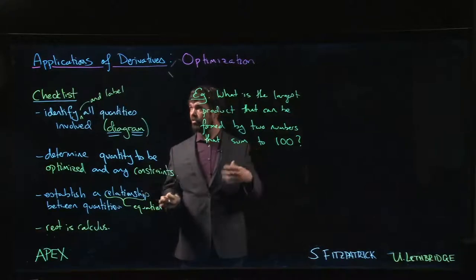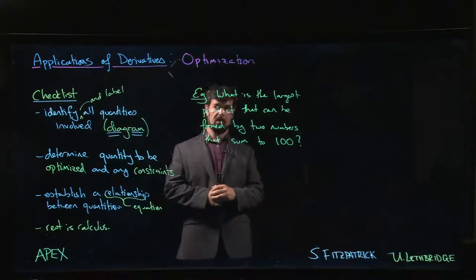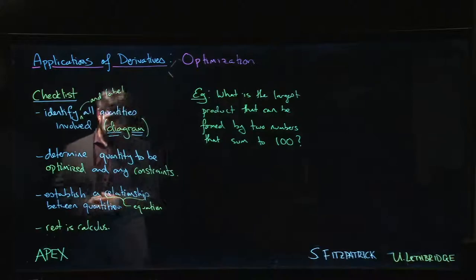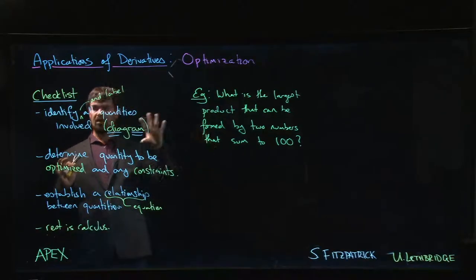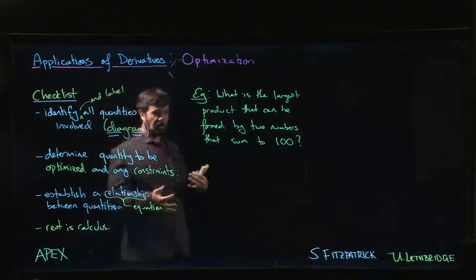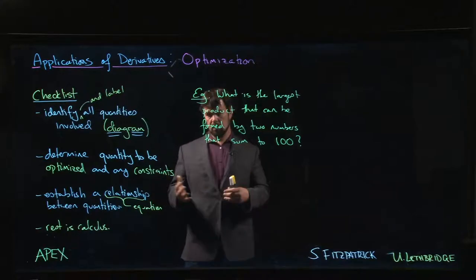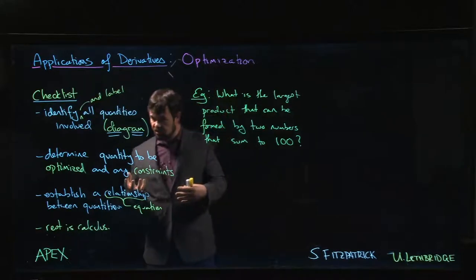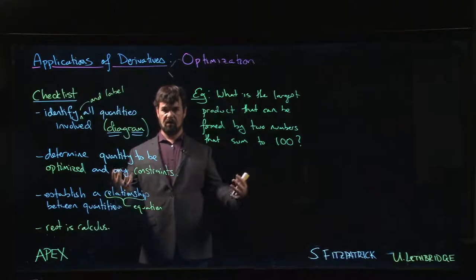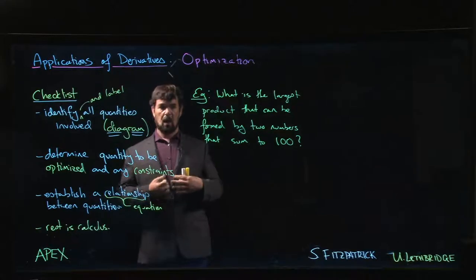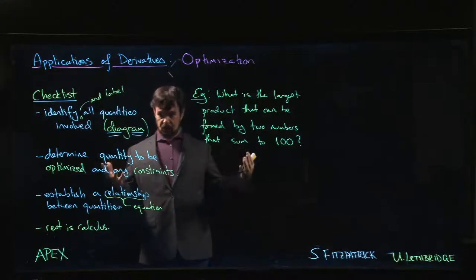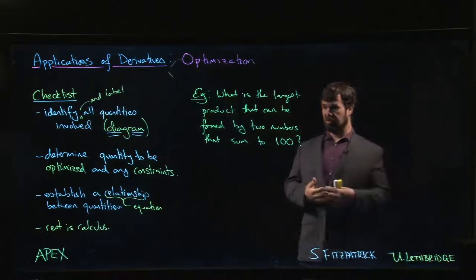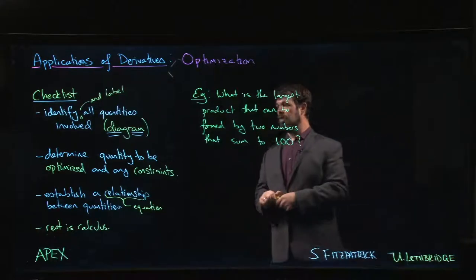We're going to move on now to optimization — this is the next application of derivatives. You'll notice that this checklist looks a lot like the one for related rates. The main difference is we're not necessarily looking at quantities changing with respect to time. Instead, we look at how changing one quantity affects another — for example, finding the best price to maximize revenue on a product, where revenue is a function of price.